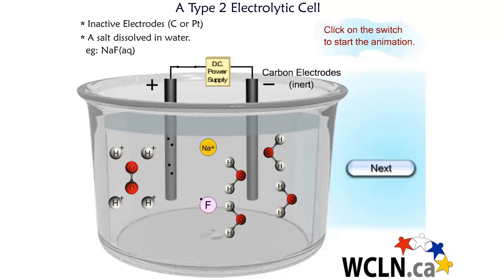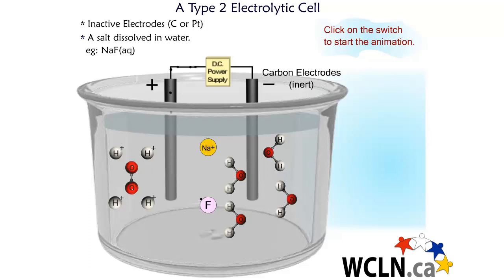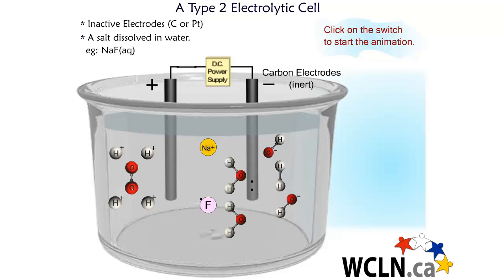This is a non-spontaneous cell, so the DC power supply is pulling the electrons from the left and pushing them toward the right. In the final step, you see that water is also reduced at the cathode, which is the negative electrode to the right. This produces two molecules of diatomic hydrogen and four hydroxide ions.